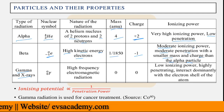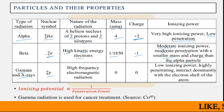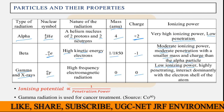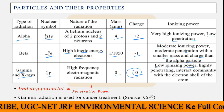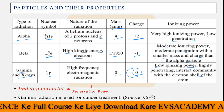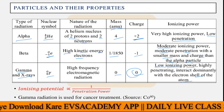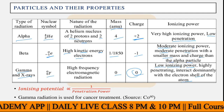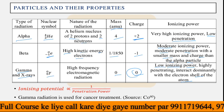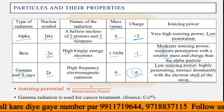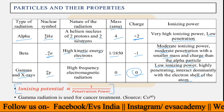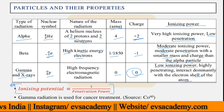Gamma and X-rays have zero atomic mass and zero charge — they are very high frequency electromagnetic radiation. Ionizing power is low because there is no charge, but penetrating power is very high because there is no mass. Gamma rays interact dominantly with the electron shells of atoms and can easily penetrate materials. Ionizing potential is inversely proportional to penetration power: if ionizing power is high, penetration power is low, and vice versa.